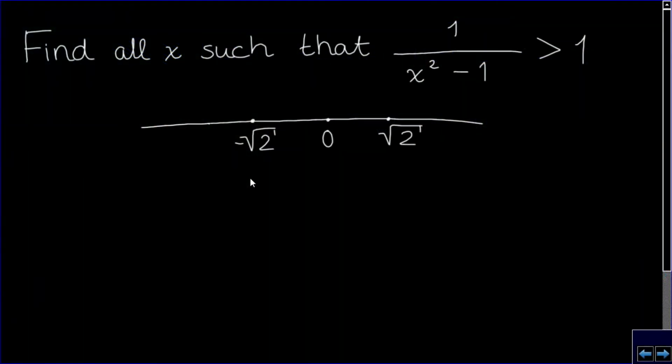So we can just check at one point per interval. For example, in the interval minus infinity to minus the square root of 2, we can take x is minus 2. We get 1 over minus 2 squared minus 1, which is 1 over 3, which is smaller than 1.